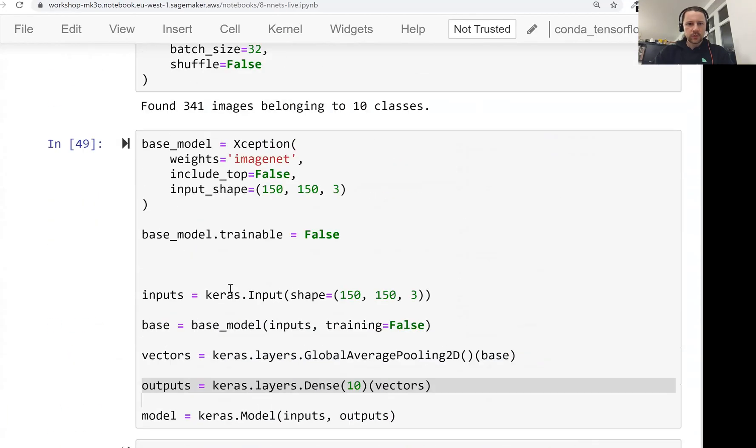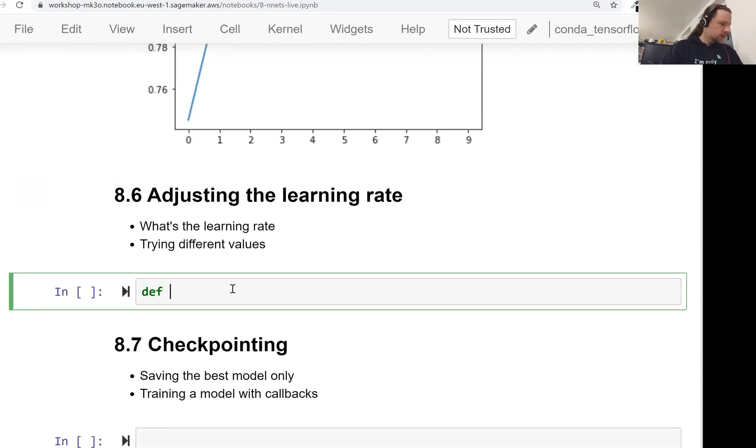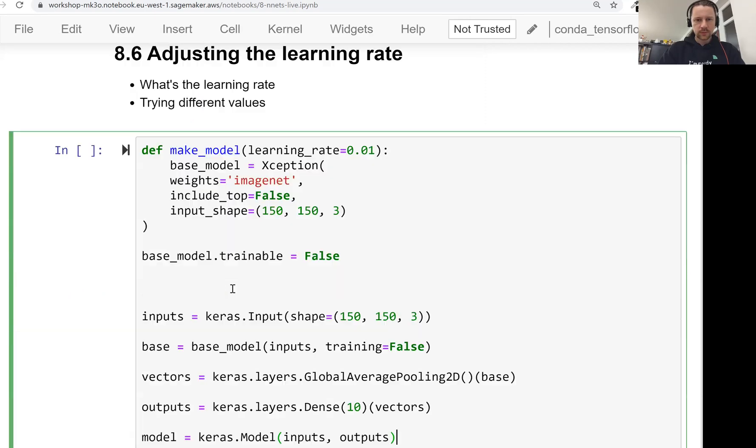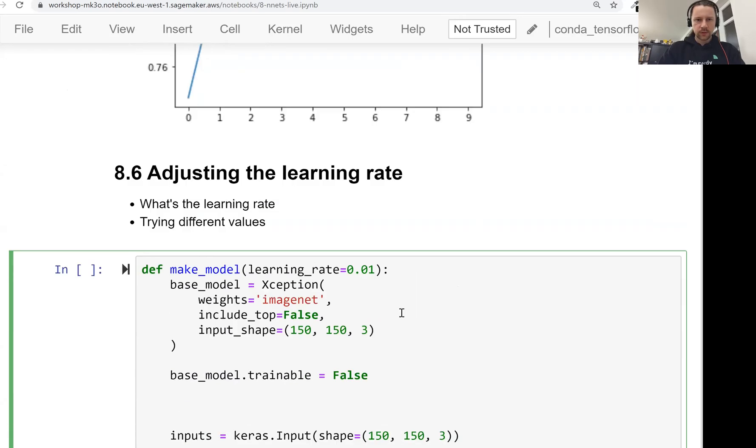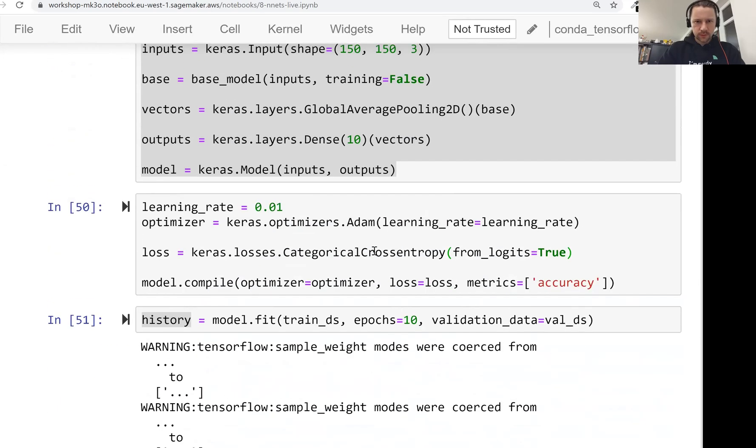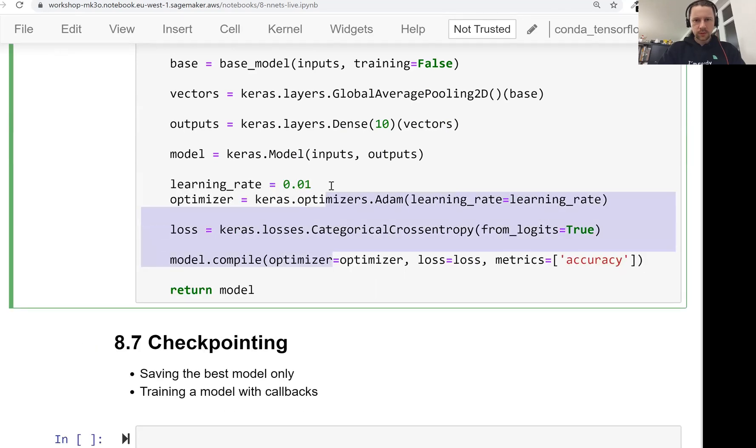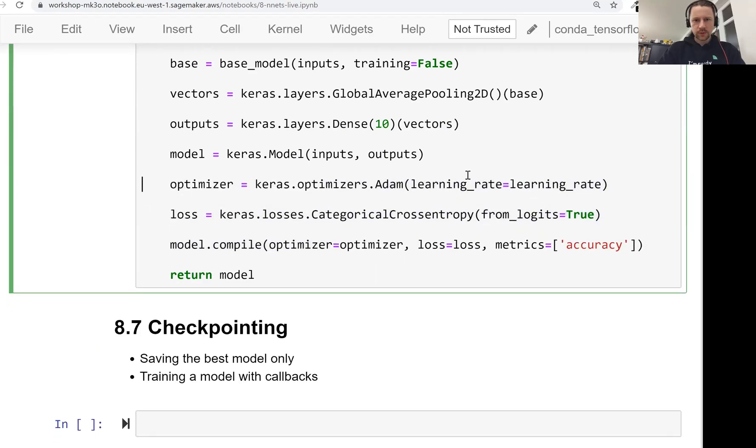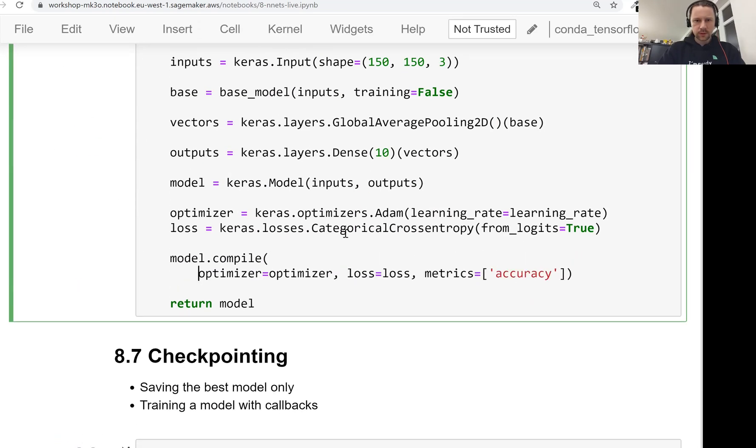And for that, let's take the code we created in the previous lesson and put this in a function. So call it makeModel. Then there will be a parameter learning rate. I'll just use this one that we used previously. So this and then I'll just return model. And I forgot to take that part as well. So I don't need this anymore because I pass it from here. Clean it a little bit. So this line is quite long.